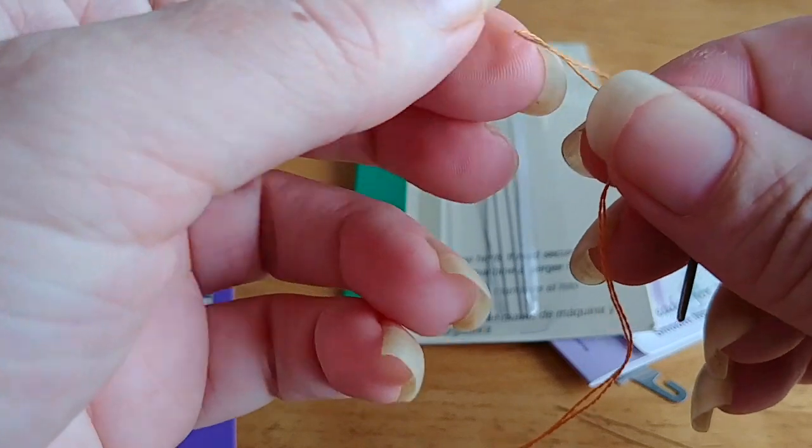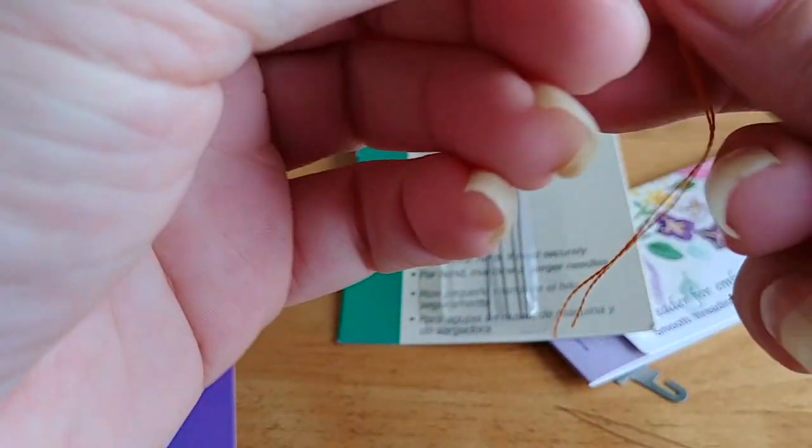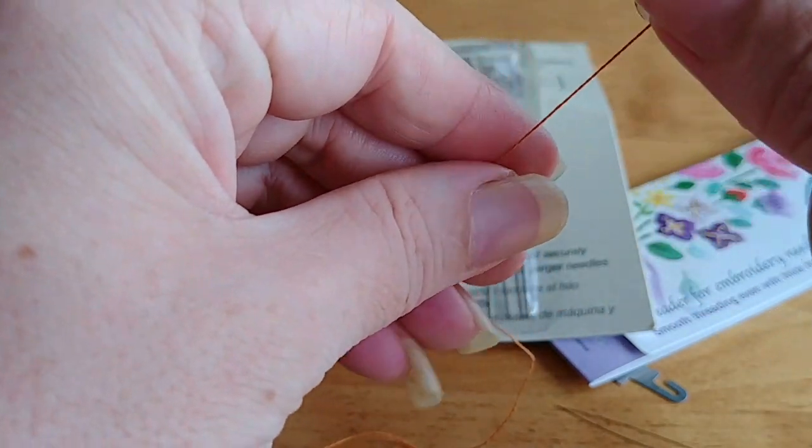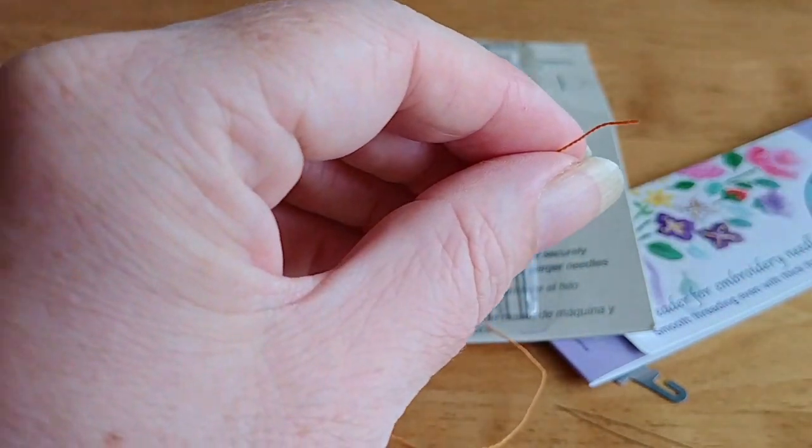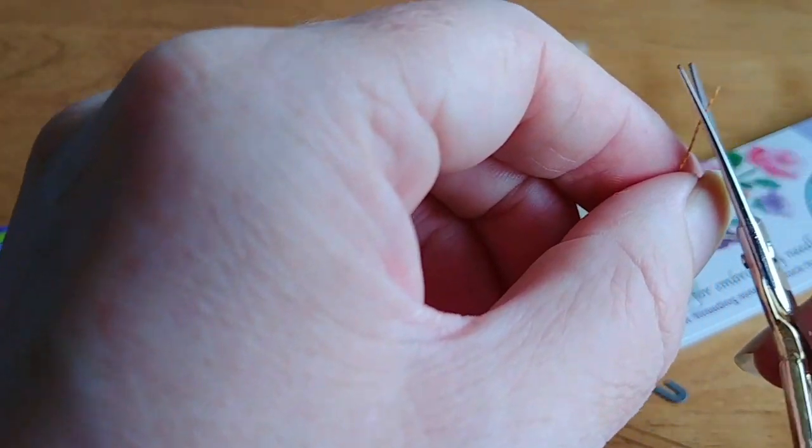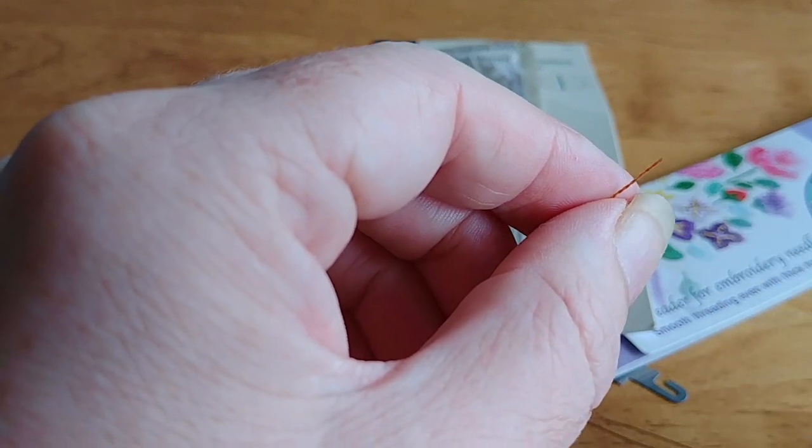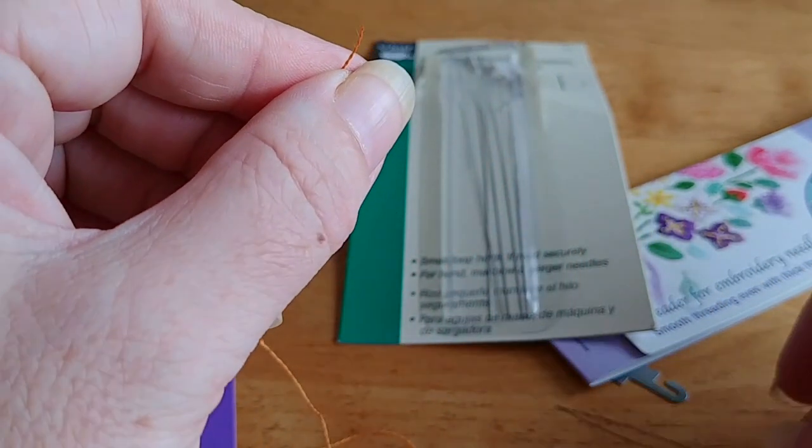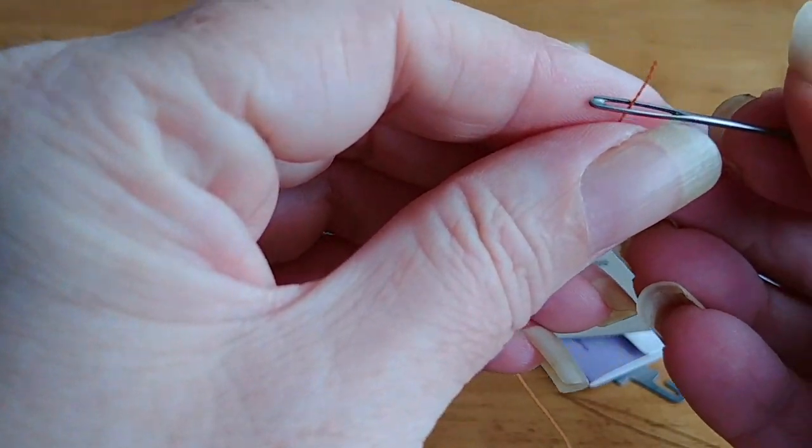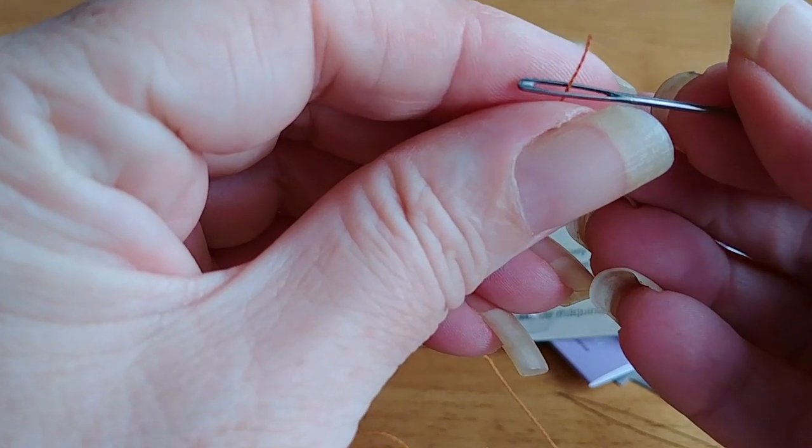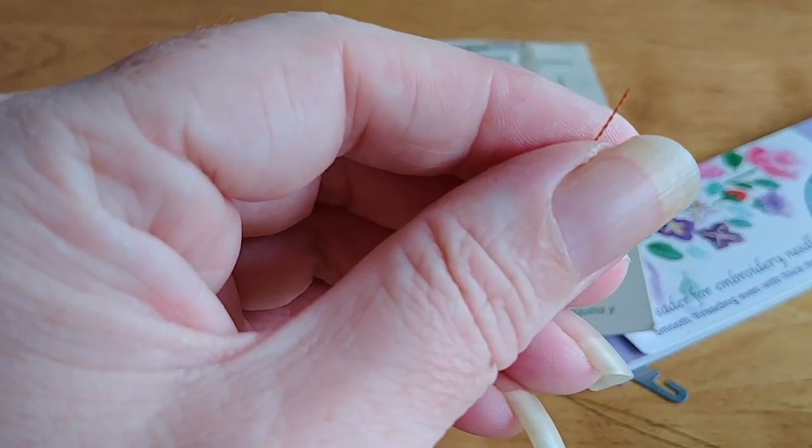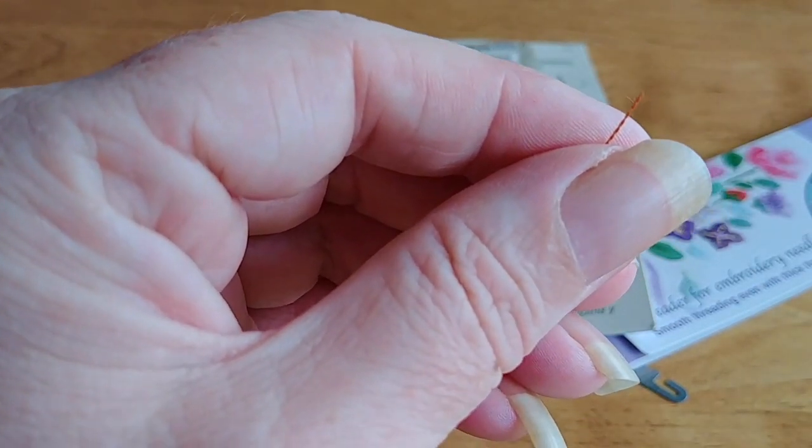Another thing that you can do, that a lot of stitchers do, is they will get their floss, a good tip if you're threading it straight through the eye of the needle, like that, is to get your scissors and make sure you've got a nice sharp end. You can even cut it at a bit of an angle, and that will kind of almost make a point on the end, and that will actually make threading a lot easier. Obviously this is a really giant needle for this, but it'll make threading a lot easier.